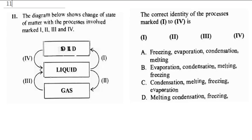The diagram below shows change of state of matter with the processes involved marked I to IV. Now it wants us to identify the correct identities. Let's start.